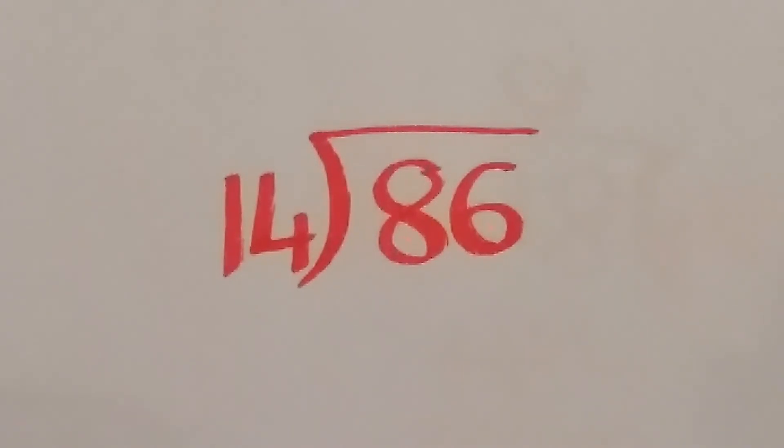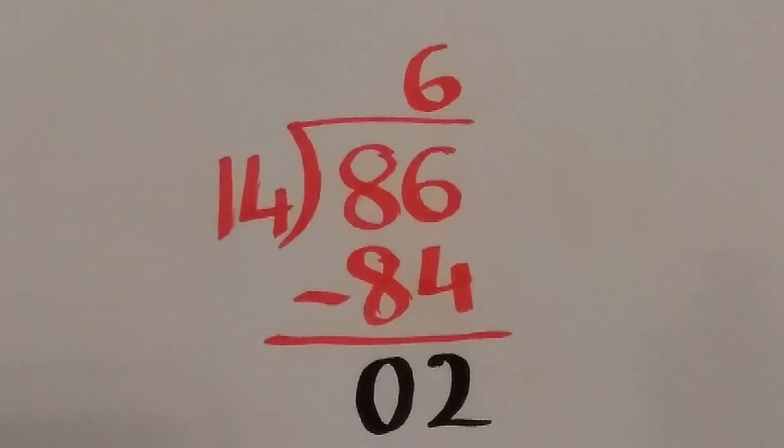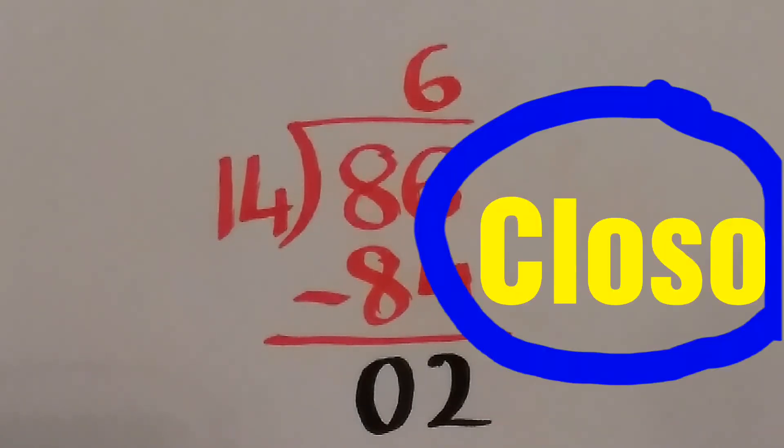Again, the total valence electron is to be divided by 14. 14 times 6 gives me 84, and the remainder is 2. As we have previously discussed, when the remainder is 2, the structure is closo.